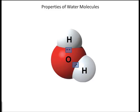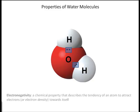There is a principle involved in chemical bonding called electronegativity. This is a chemical property that describes the tendency of an atom to attract electrons, or electron density, toward itself.